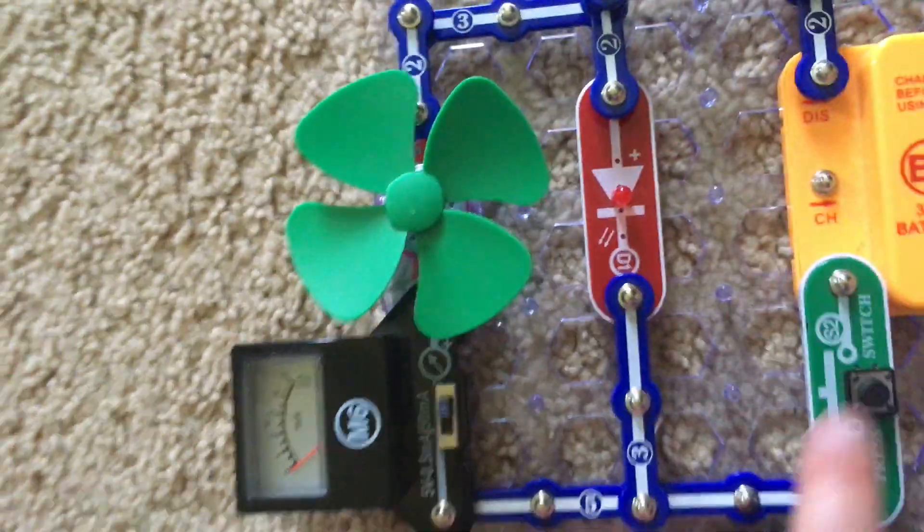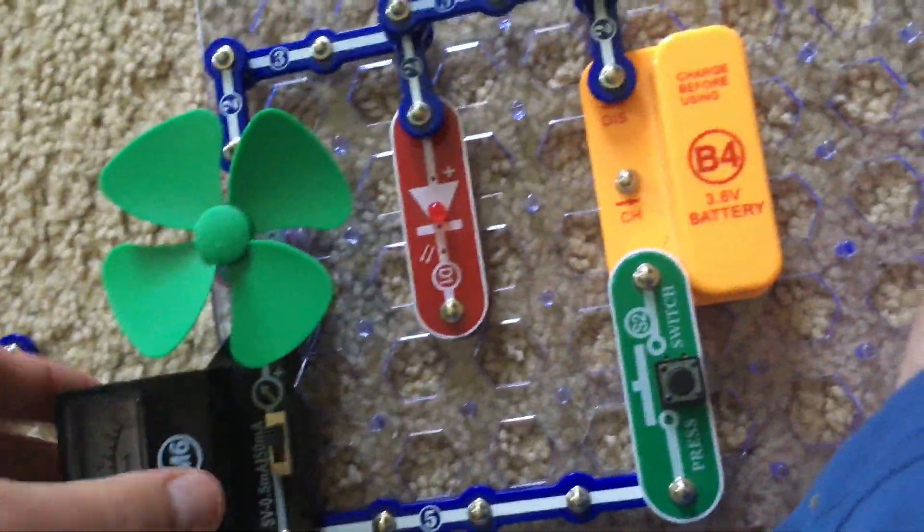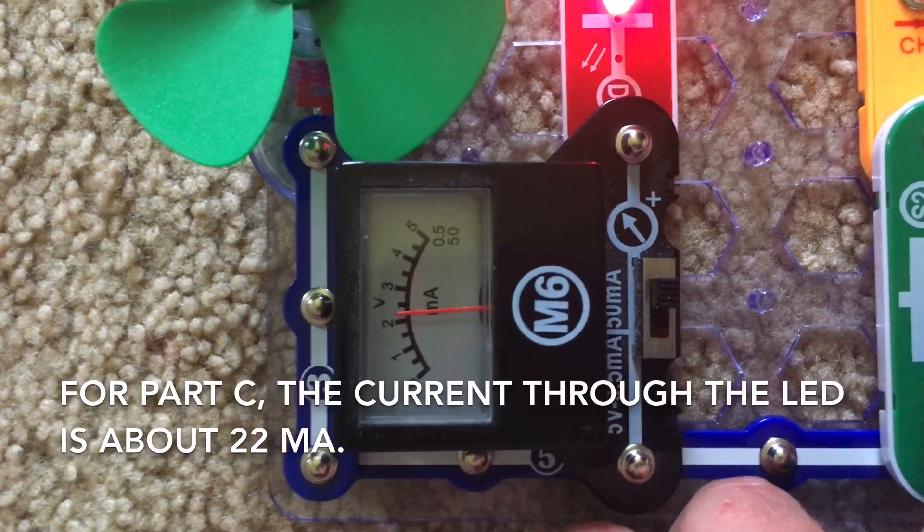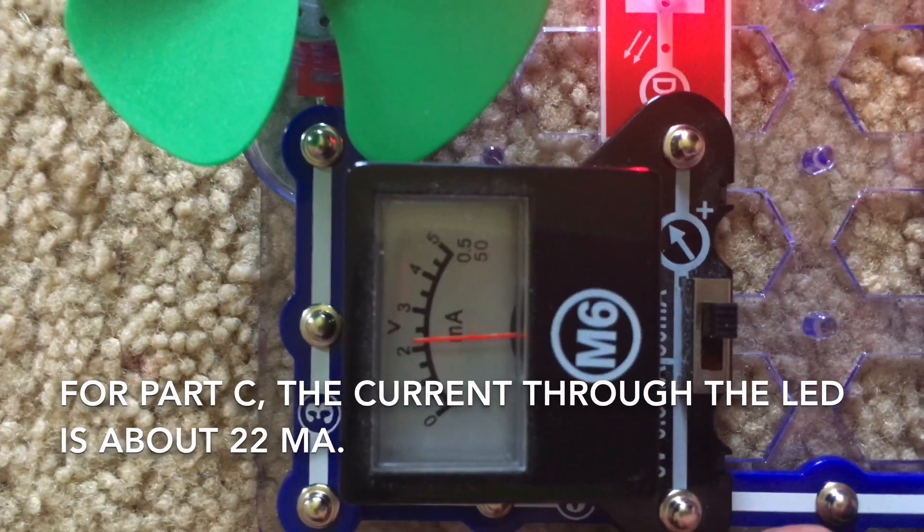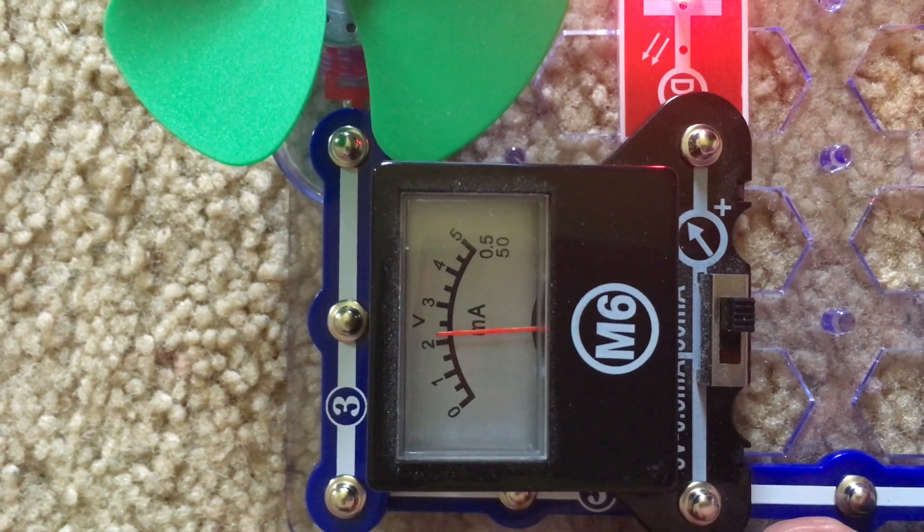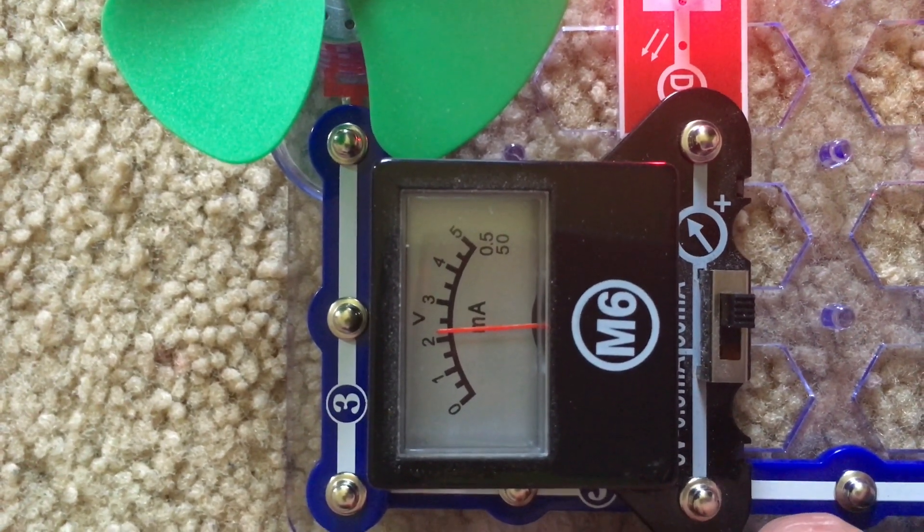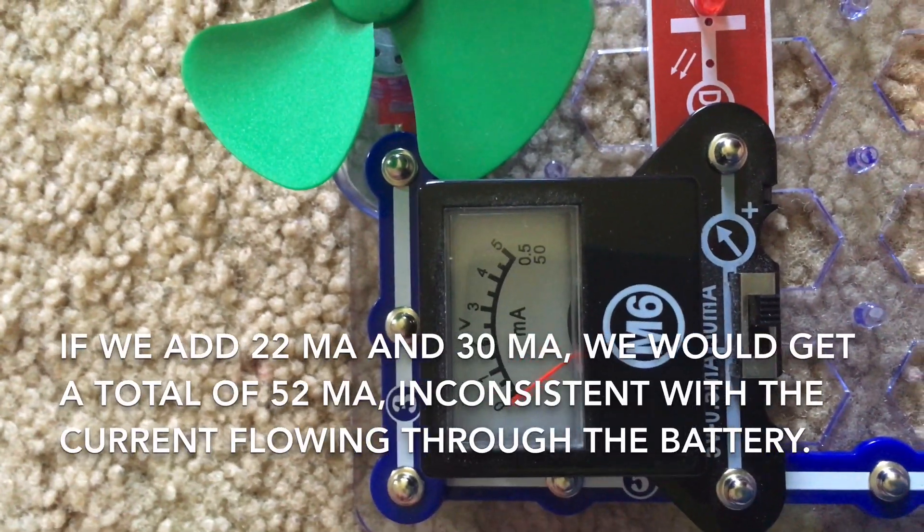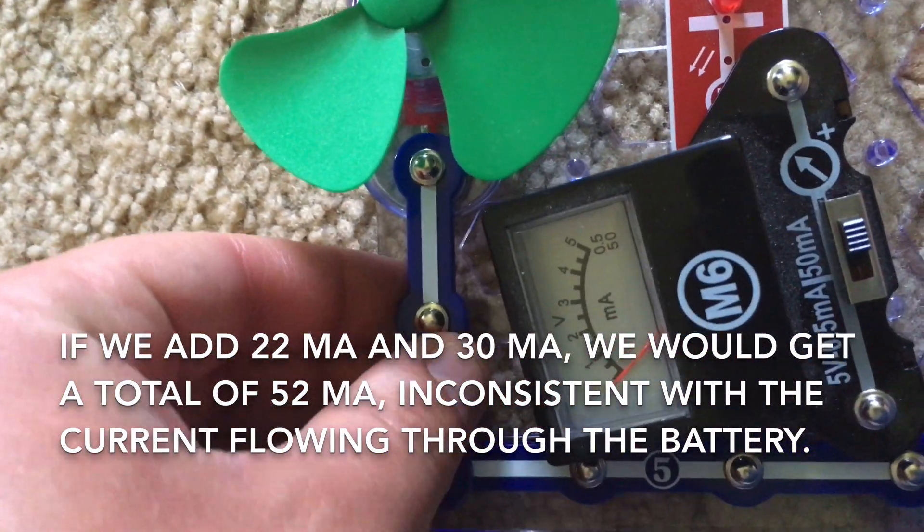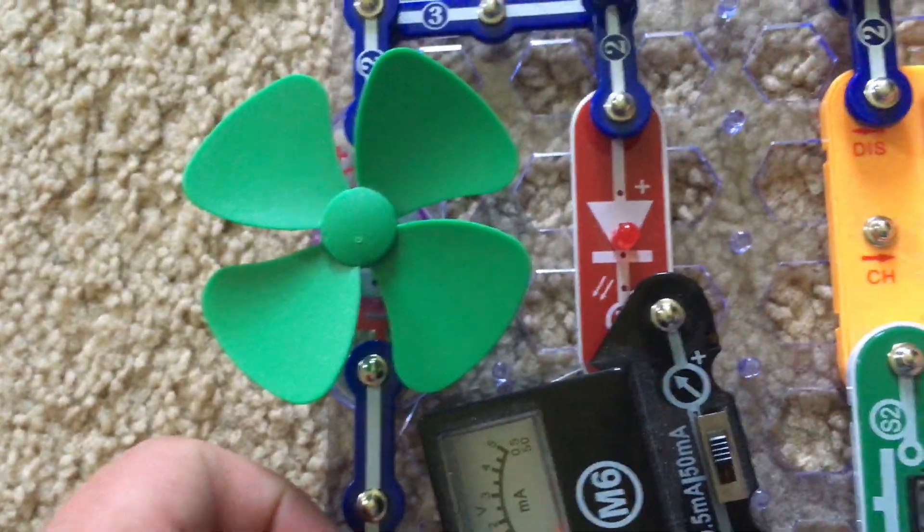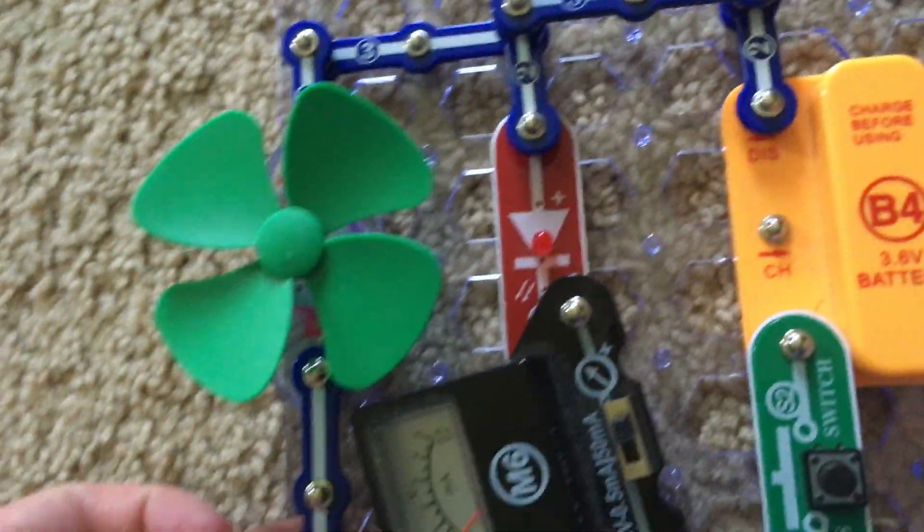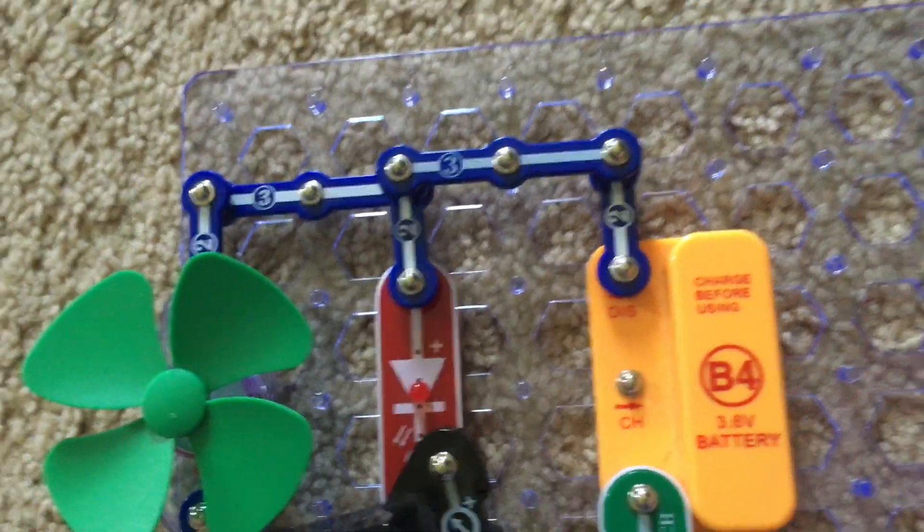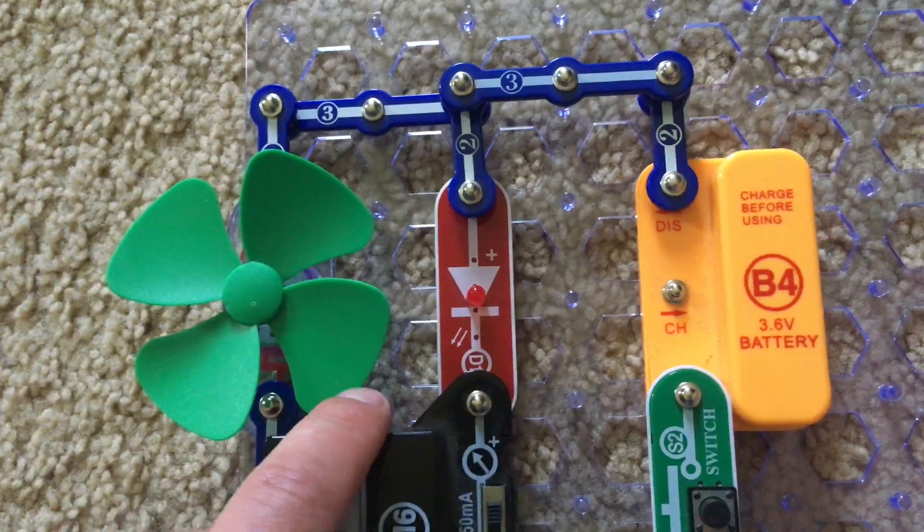And then for part C, for the red LED, the meter records about 22 milliamps. So if we add 22 milliamps and 30 milliamps, that would give us 52 milliamps. In that case, it doesn't seem like it equals the total current flowing through the battery.